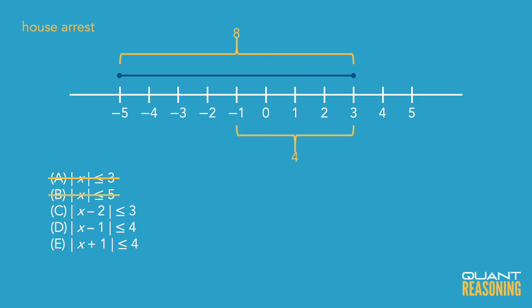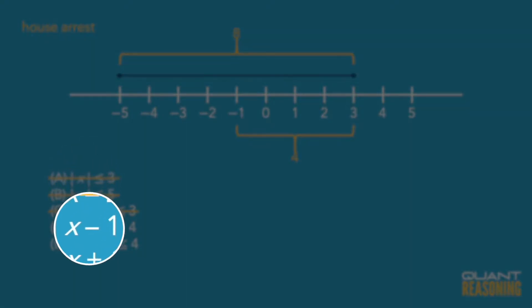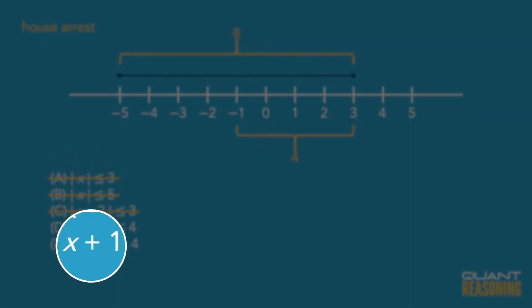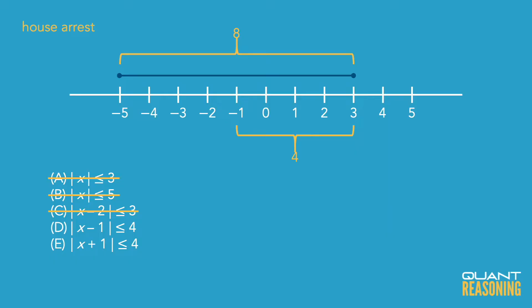We've got an absolute value that's a bit offset, and you can also eliminate c based on that because the shaded part is offset by one. If we shift that shaded part one unit to the right, it'll be centered around zero. So which of these answer choices is effectively shifting the shaded part one unit to the right? It looks like that's answer choice e.